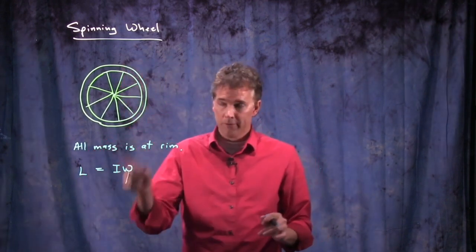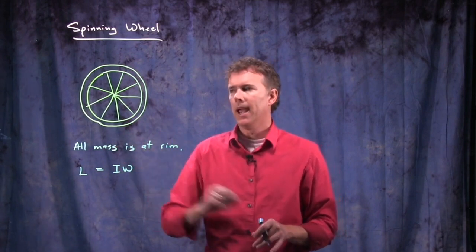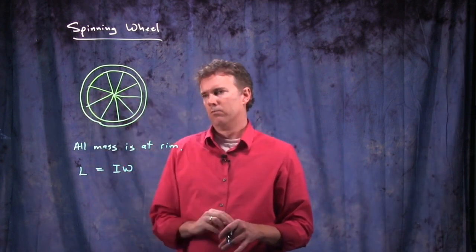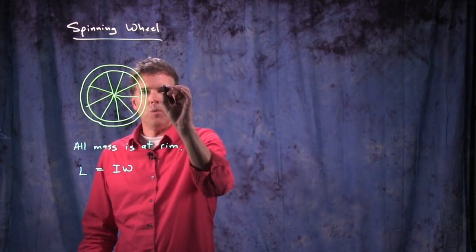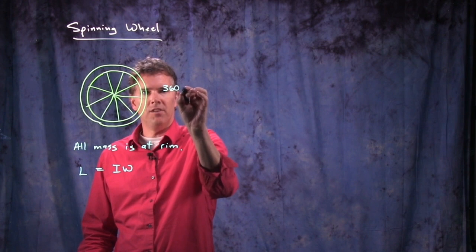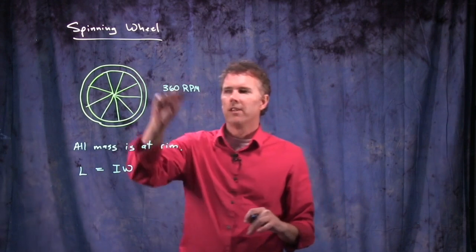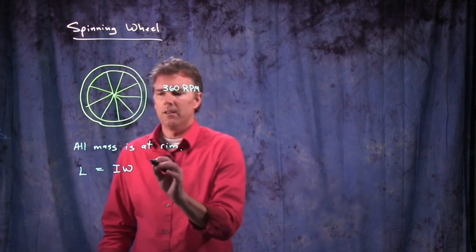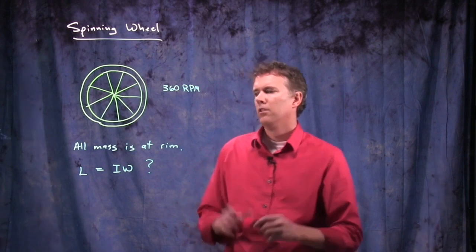So if we're interested in calculating the angular momentum, we need to know a couple things. One, we need to know the moment of inertia of the wheel, and two, we need to know how fast it is going in angular velocity. So let's take a regular bicycle wheel, and let's say you're racing down the road, and omega is not given, but what is given is that you are going at 360 RPM. This is how fast that wheel is rotating. And let's see if we can calculate this, L equals I omega.